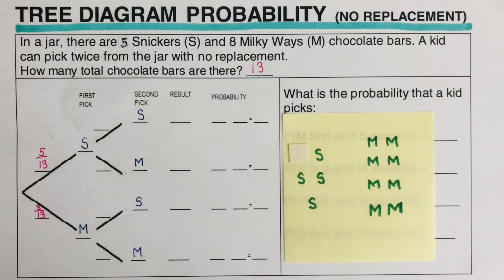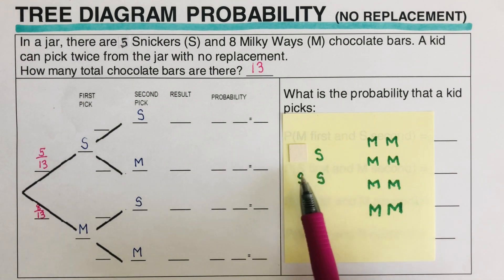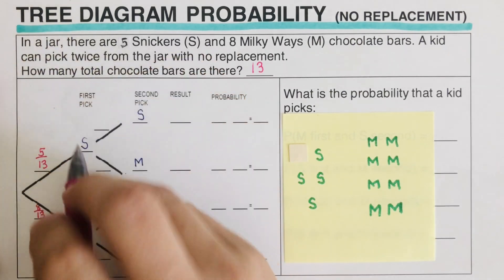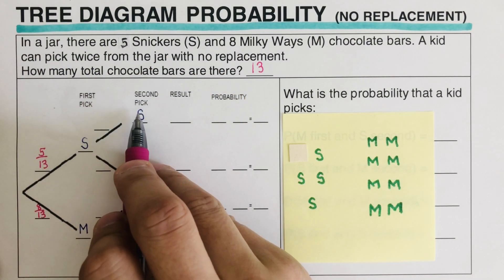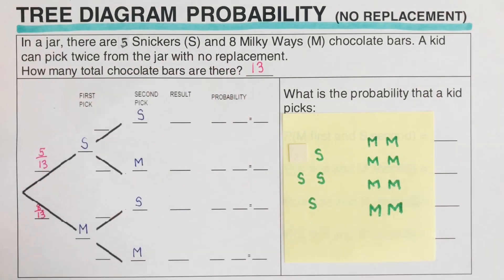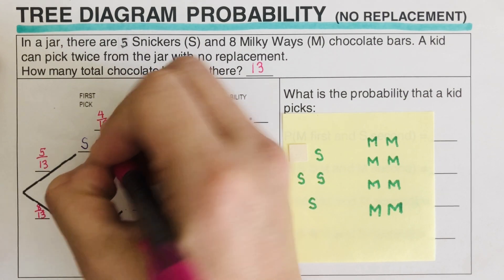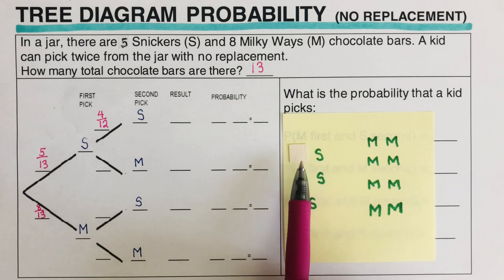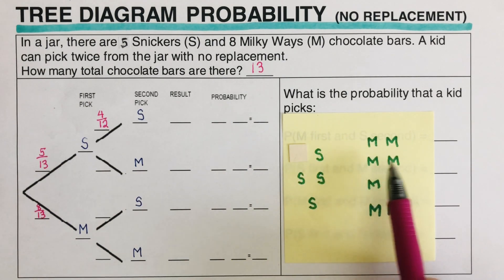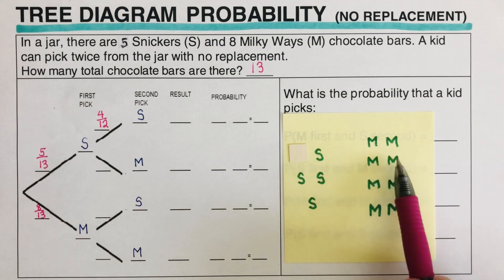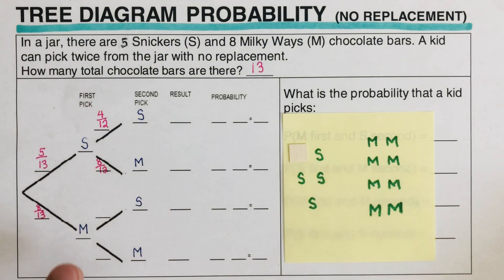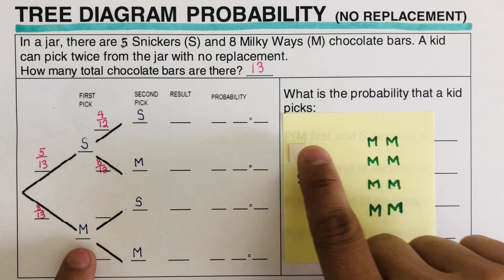Now, if a Snickers was picked first, I cover it and determine the remaining probabilities. The probability of picking another Snickers is four over twelve, because one Snickers is already gone. The probability of picking a Milky Way after a Snickers was taken is eight over twelve.